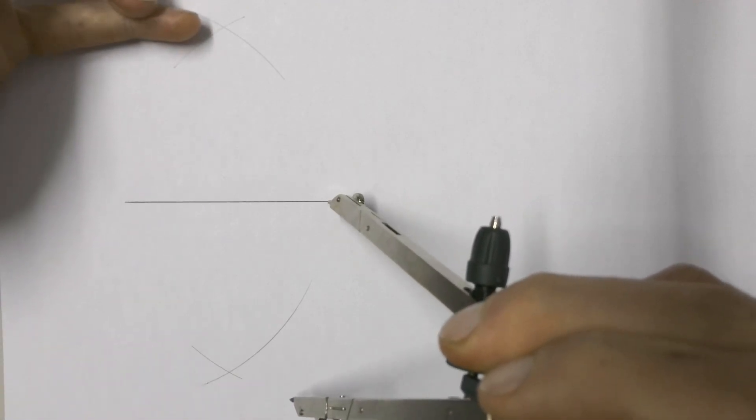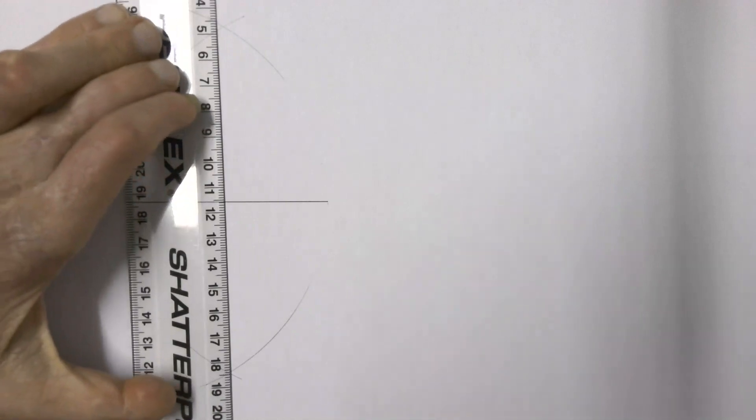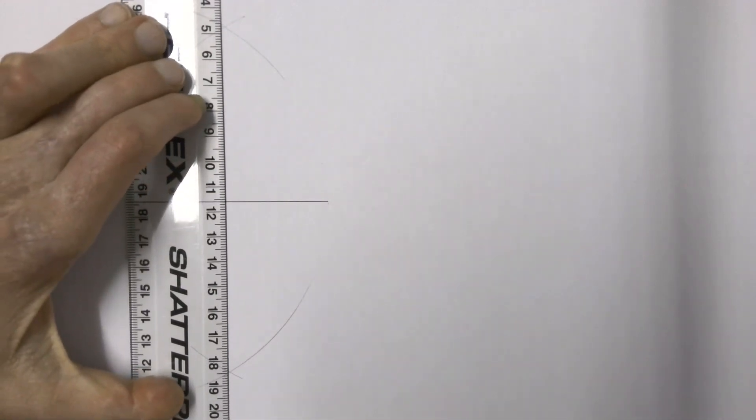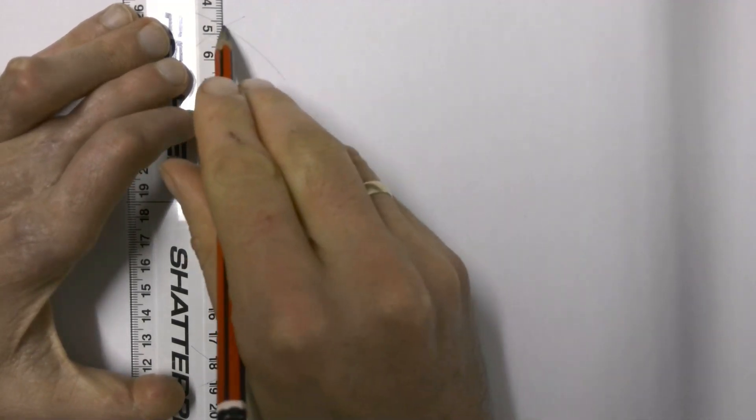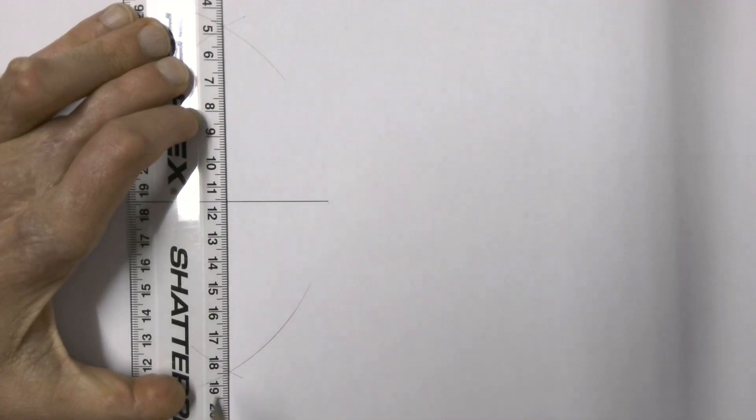and the two arcs cross each other at the top. Now you'll take your ruler and you're going to join the two points that have now been made where those two sets of arcs have intersected each other. And by